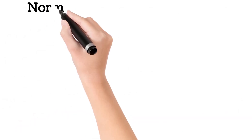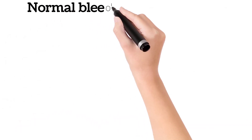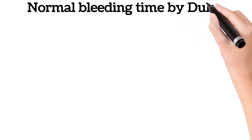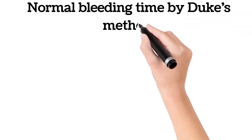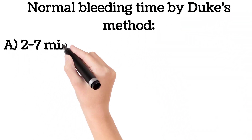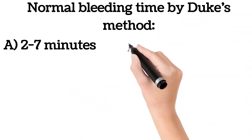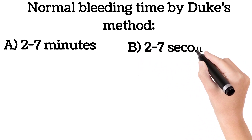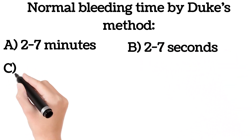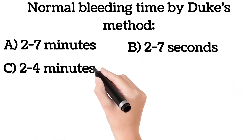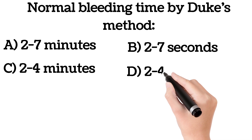Normal bleeding time by Duke's method: A. 2-7 minutes, B. 2-7 seconds, C. 2-4 minutes, D. 2-4 seconds.